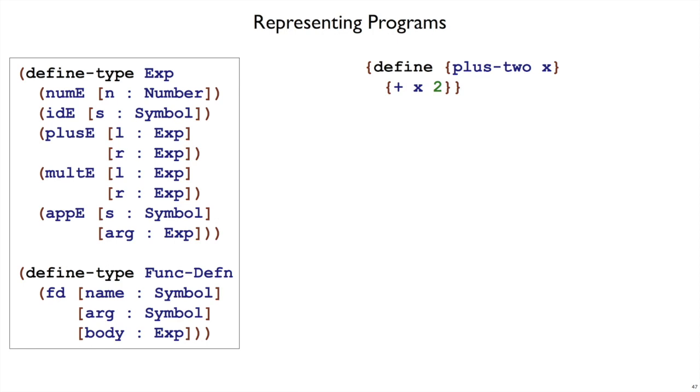Here is a program that is just a function definition. How are we going to represent the function definition? That's using funcdefin, so it'll be fd, and it's fd with quote plus-two for the name of the function, quote x for the argument to the function, and then the body of the function, plus x two, is a plus e with an ide for x and an nume for the two.